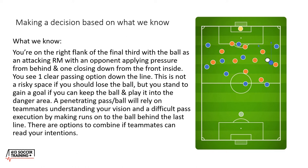Putting that all together: you're on the right flank of the final third with the ball as an attacking right mid, with an opponent applying pressure from behind and one closing down from inside. That means you've got to speed up your decision making or hold them off — keeping your body between the player and the ball. You see one clear passing option down the line. This isn't a risky space if you should lose the ball, but you stand to get a goal if you can keep it and play into a danger area. A penetrating pass relies on teammates making runs onto the ball behind the last line, and there are options to combine if teammates can read your intentions.